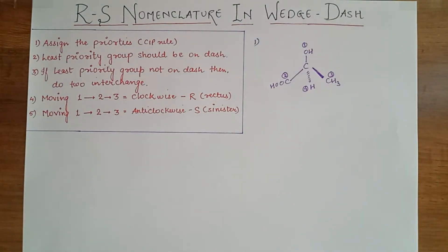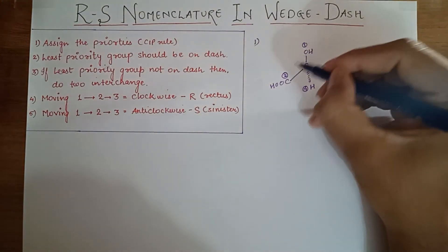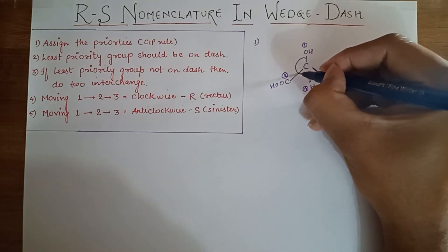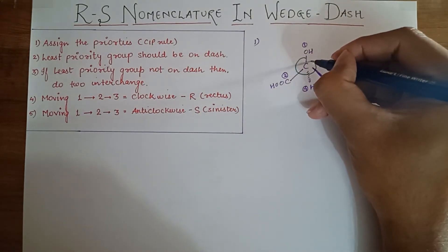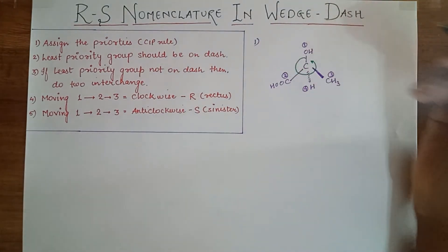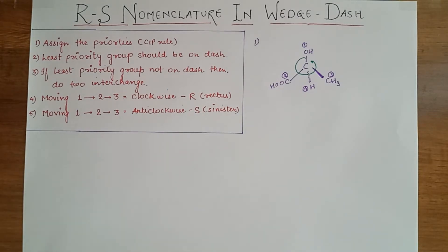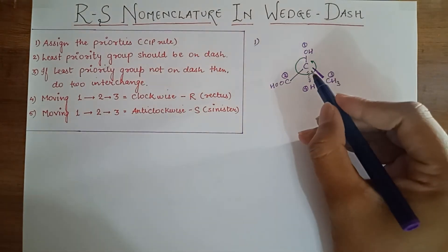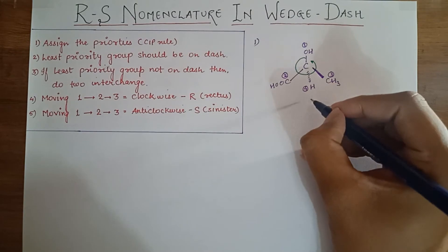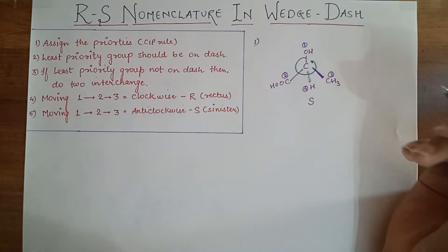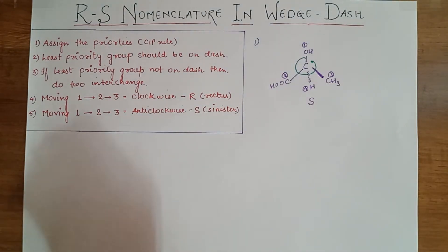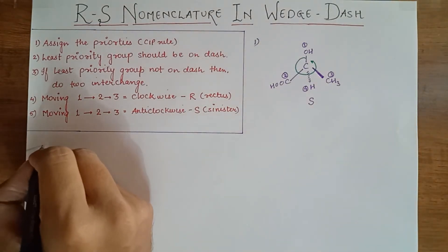Now move from priority one to two to three. The direction is anti-clockwise, so the configuration is S — that is, sinister.